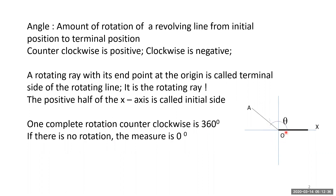One complete rotation counterclockwise is called 360 degrees. If the ray goes around and comes back to the initial position, we have rotated 360 degrees. Dividing by 4, each quarter is 90 degrees, and at 90 degrees the lines are perpendicular. If there is no rotation, it is 0 degrees. Any rotation greater than 360 degrees can be reduced to a value less than 360 degrees, since after 360 degrees it returns to 0.